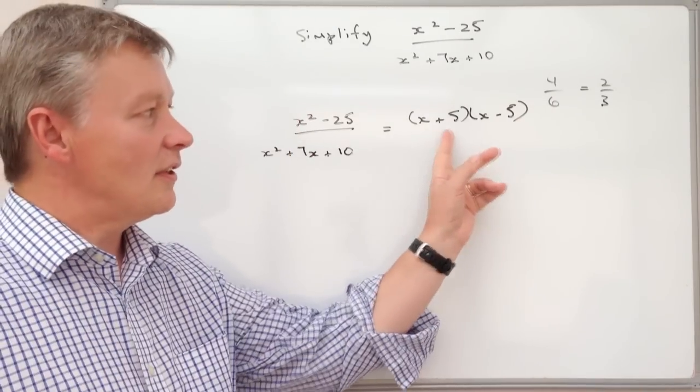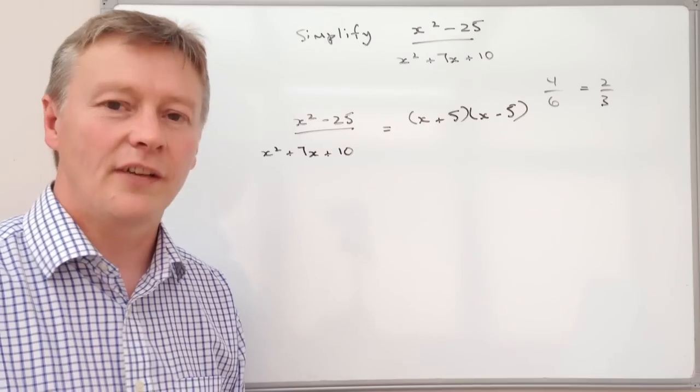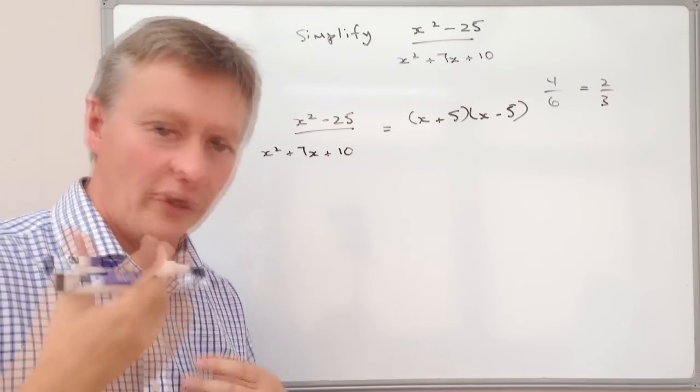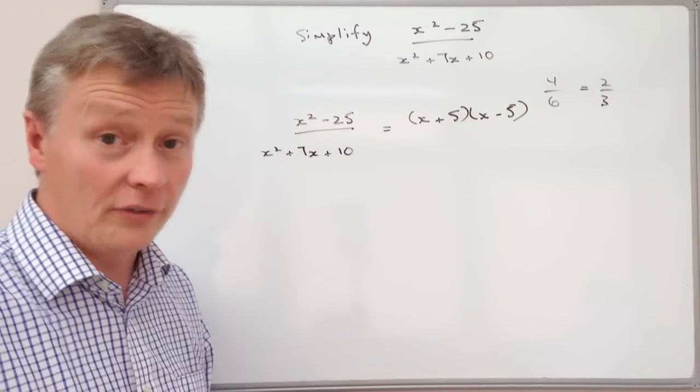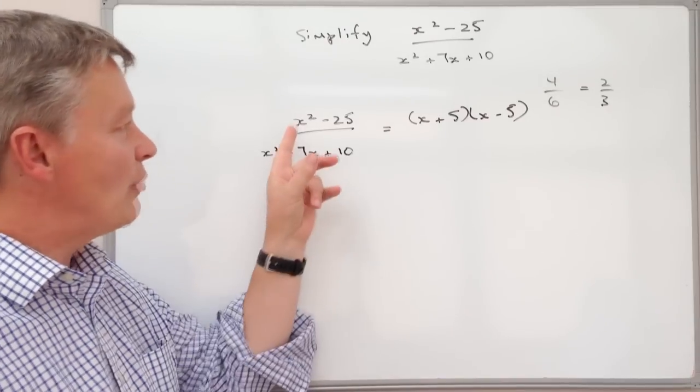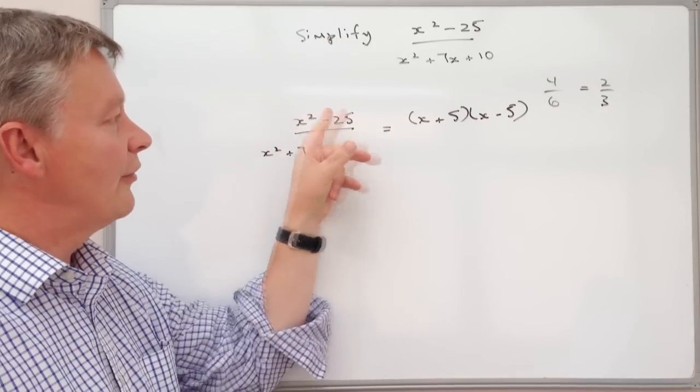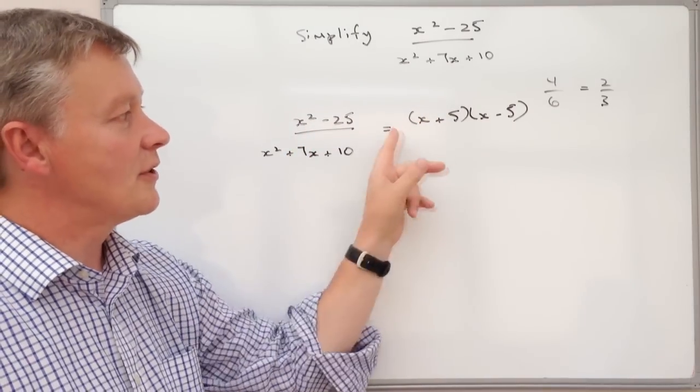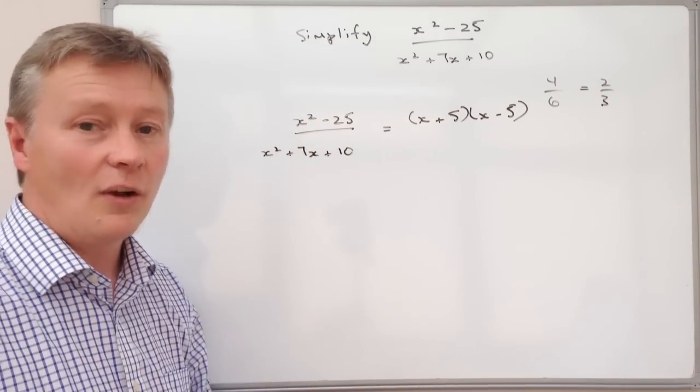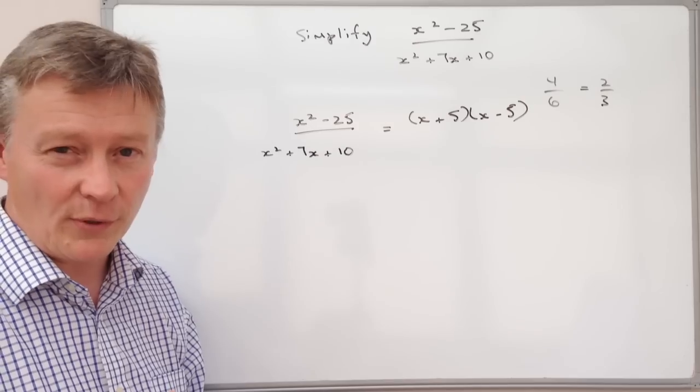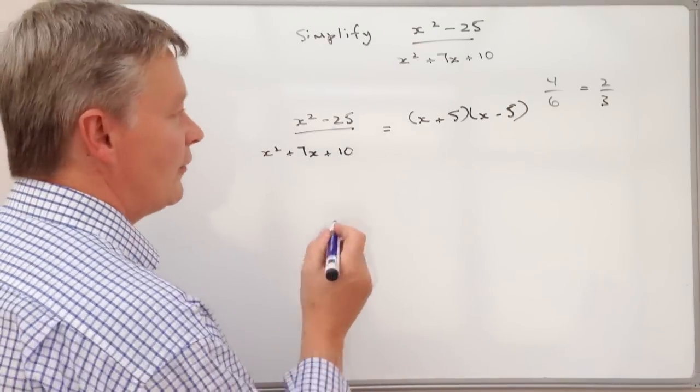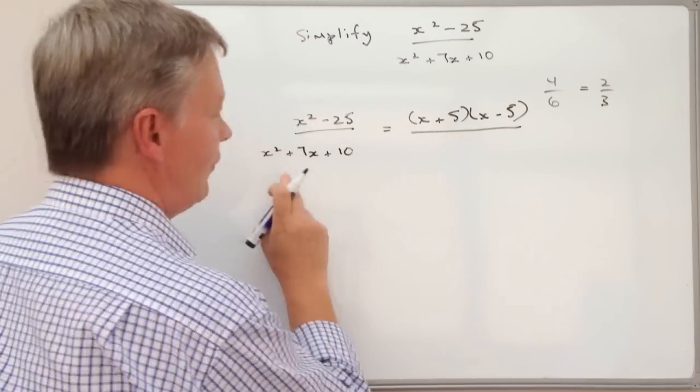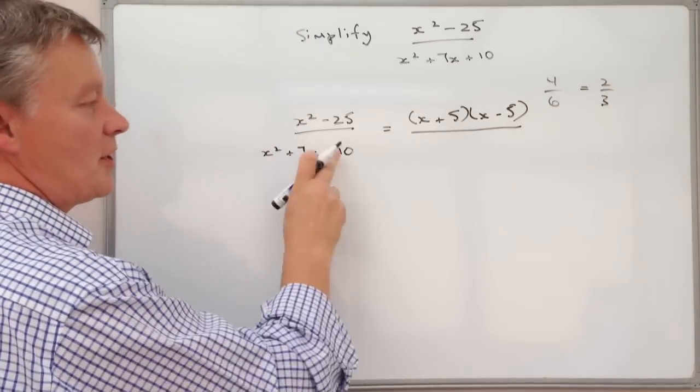Now if that's not quite clear to you then maybe you need to have a look at one of the other videos and there is another video on difference of 2 squares. But basically what we're doing now is taking the factors of that and if you multiply that back out you'll see that it actually does work out to x squared minus 25. I'm going to do the very similar thing with the expression on the bottom.